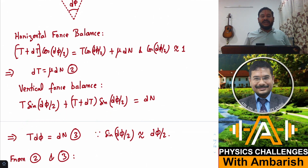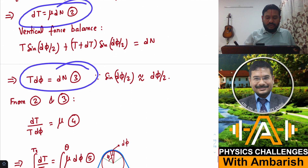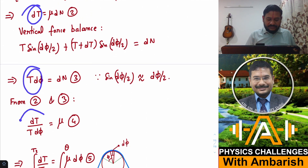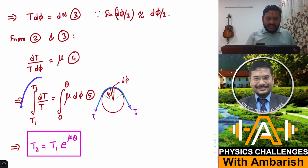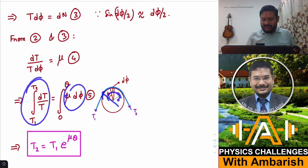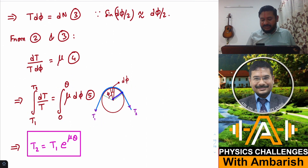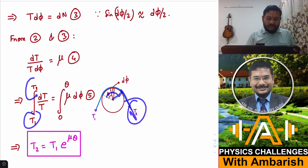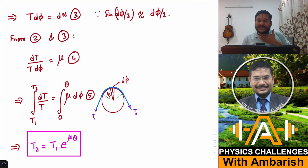So T*dφ = Dn is equation 3. Now divide equation 2 by equation 3: dT / (T*dφ) = mu, so dT/T = mu*dφ. Integrating — φ varies from 0 to θ, tension goes from T1 to T2 — we get T2 = T1 * e^(mu*θ). This is the result I stated and I have now proved it. I am going to use this result for solving the current problem.